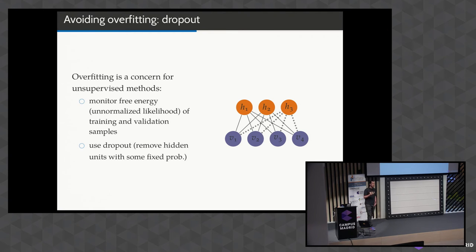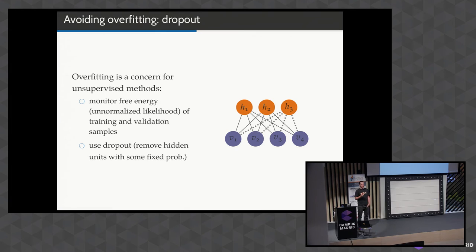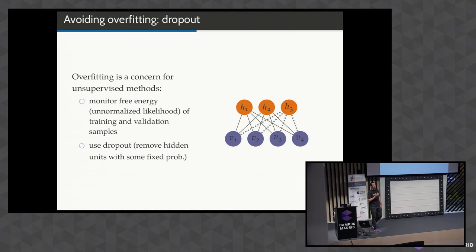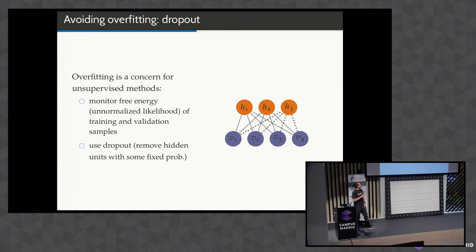One important thing: the number of parameters in this model is huge — of the order of the number of visible units times the number of hidden units, potentially in the thousands or millions for large networks. So it's really important to correct for overfitting. The simplest way is dropout: during gradient descent steps, hidden units are randomly dropped, encouraging the hidden units to learn robust patterns in the data without depending on other hidden units. Implementing this is easy — at each gradient step, randomly choose a hidden unit and drop all its weights to zero, as if you built a network with fewer hidden units.